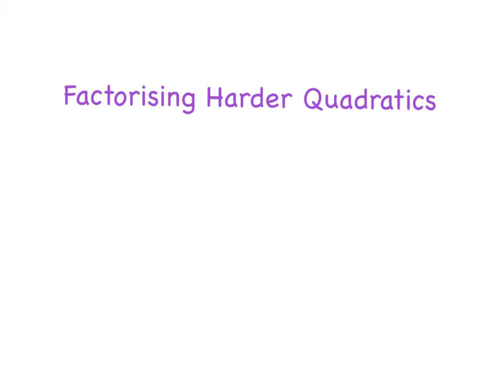Okay, so in today's lesson we're going to look at factorizing harder quadratics. Now we all know what a quadratic looks like - it should have an x squared, an x, and a number. Most of the time we've been dealing with the coefficient of the x being a one, but what if we have the coefficient of the x squared as a number higher than that, like 5x² + 4x + 2?